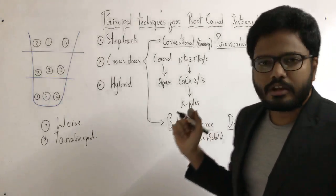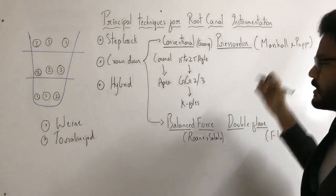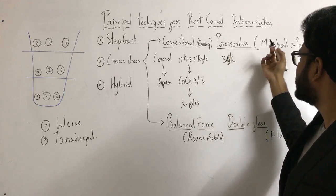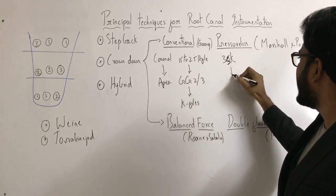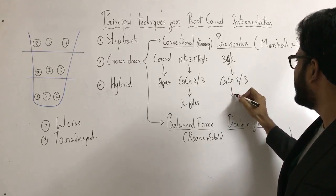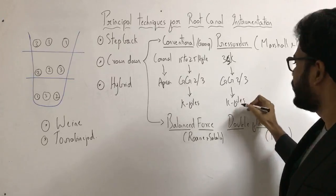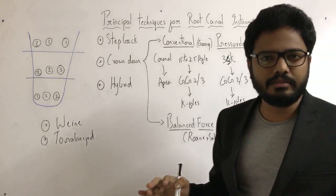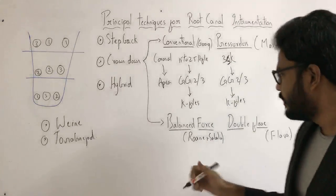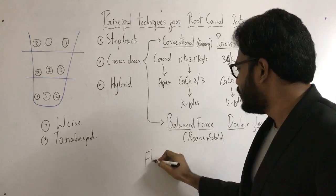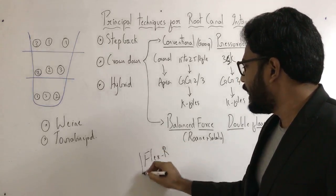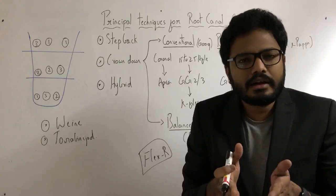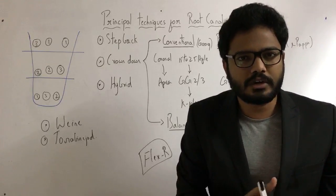The crown-down pressureless technique was given by Marshall and Pathak. Here, instead of H-files, we use a 35 size K-file till it passively binds in the canal. Then we use Gates-Glidden drills size 2 or 3. Then we use K-files of sequential sizes till we reach the working length. That's the summary of the pressureless technique.